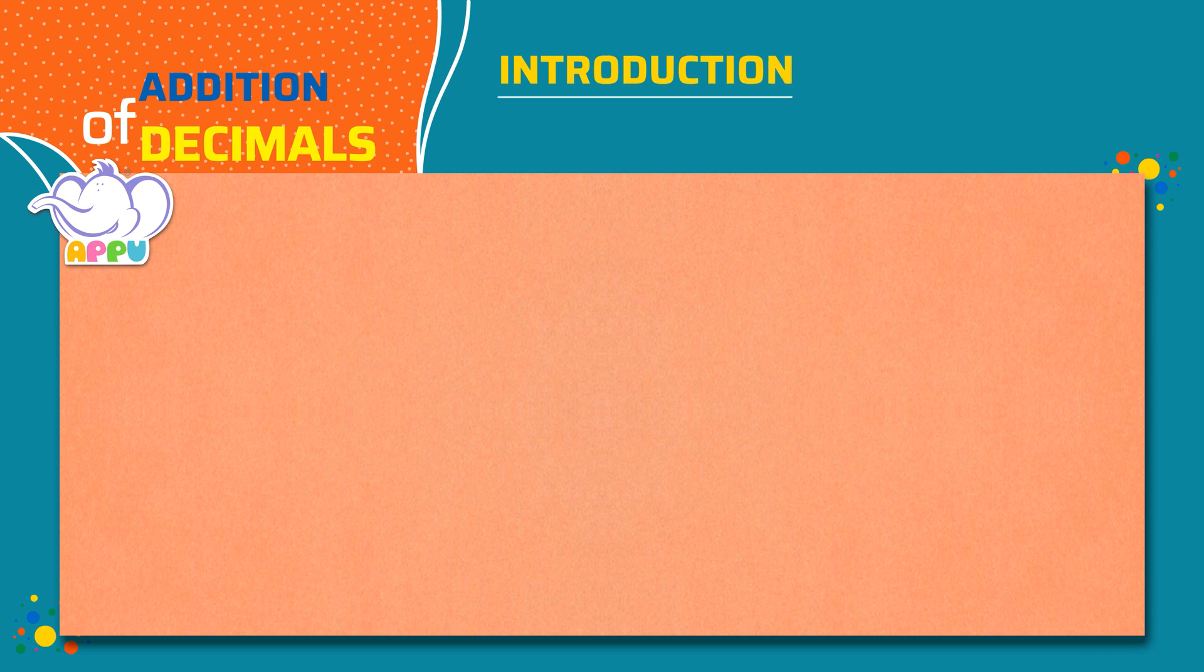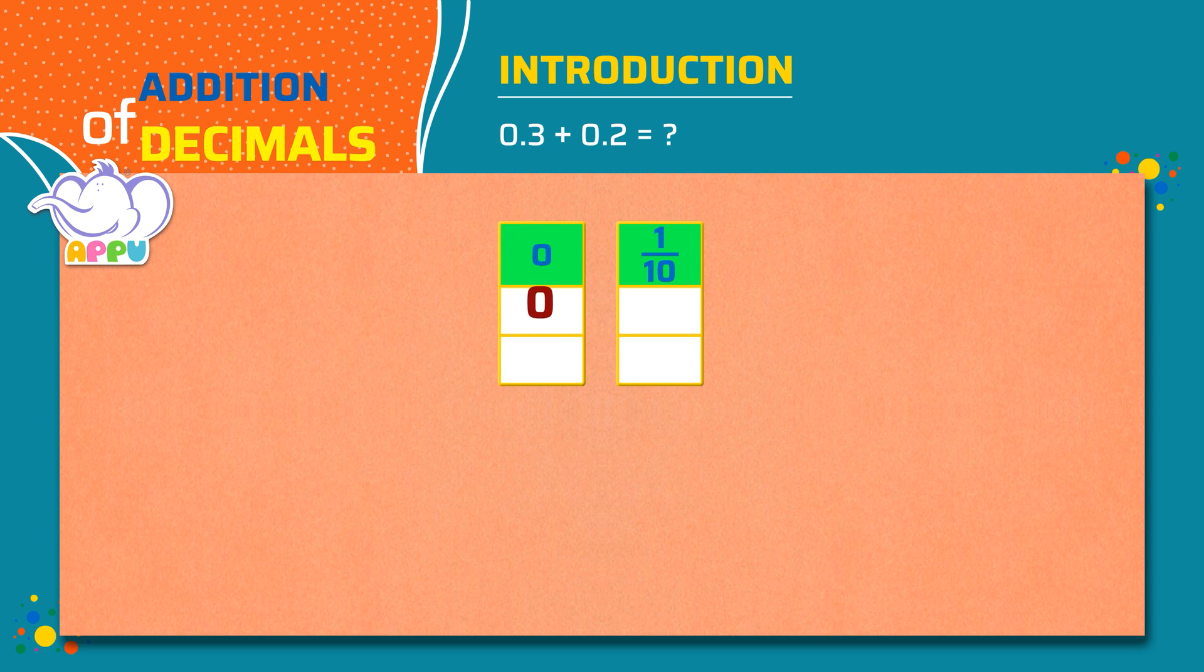Let's add decimal numbers. What is 0.3 plus 0.2? We write 0.3 in the place value chart as 0 ones and 3 tenths, and 0.2 as 0 ones and 2 tenths.